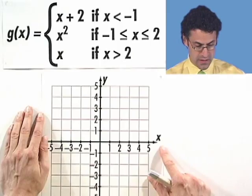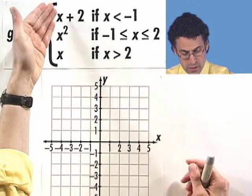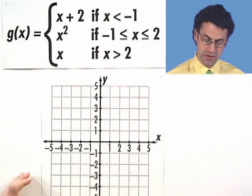We can now actually graph piecewise defined functions by just graphing the appropriate graph on the appropriate region. So g of x is defined to be one of three things, depending upon which of the regions you're in.